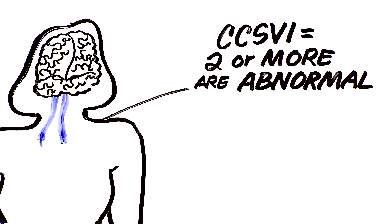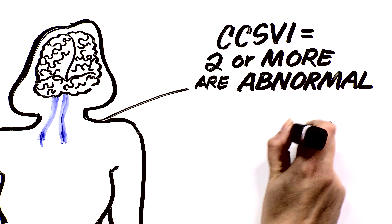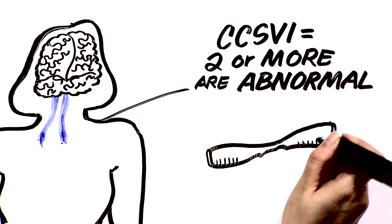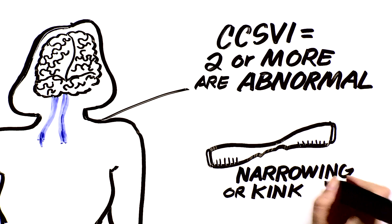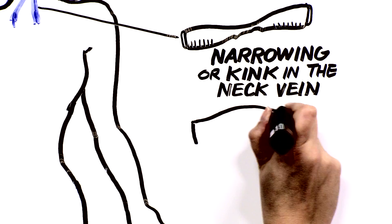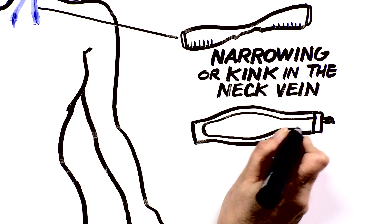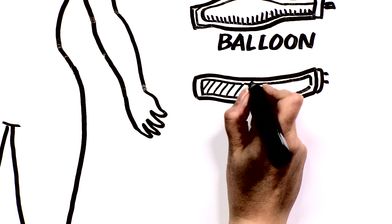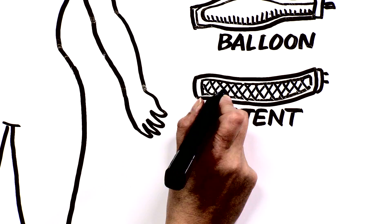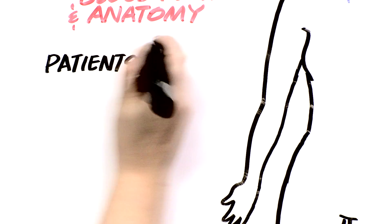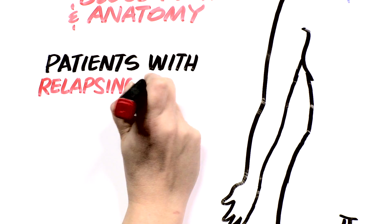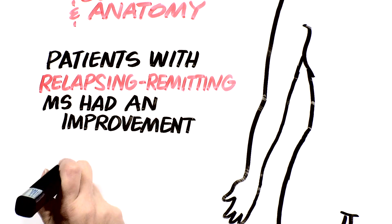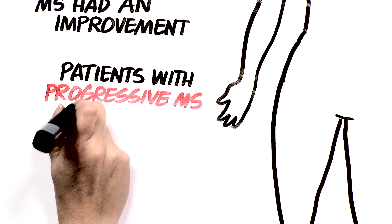Around the same time that he described CCSVI, Dr. Zamboni reported on 60 patients with MS who he had diagnosed with the condition. Each patient had a narrowing or kink in at least one neck vein and had those abnormalities treated by having a balloon blown up within the vein. Some patients also had a stent inserted, which is a cage that's often used to keep arteries open. Dr. Zamboni reported that there were no serious side effects from the treatment. Patients with relapsing remitting MS had an improvement in their MS symptoms, but the patients with progressive MS had no improvement.